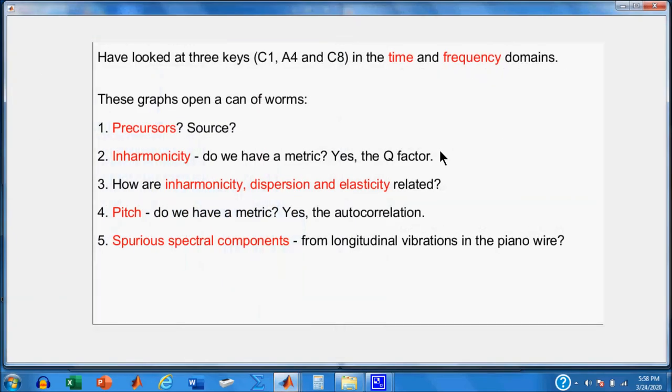Okay, we're just about finished. We've looked at three keys in two domains, time and frequency. And we've noticed some precursors. Where they come from, we'll have to look into. We've noticed inharmonicity. And it would be nice if we had a metric for that. And we do, which we'll talk about later in a subsequent session, a Q factor. We'll talk a lot about how inharmonicity, dispersion, and elasticity are related.